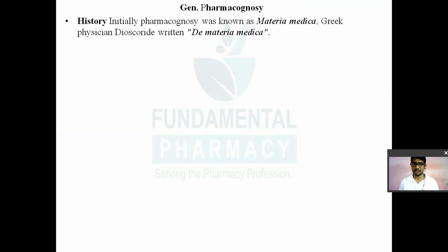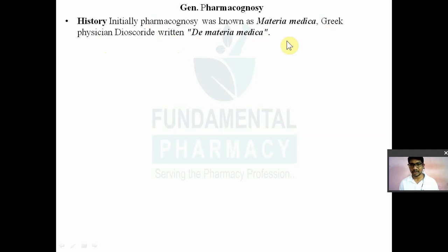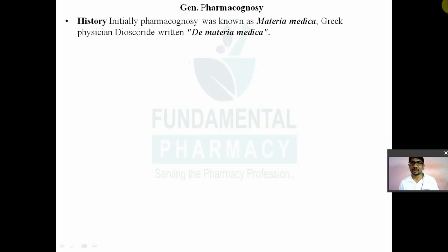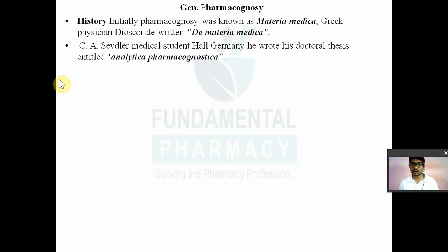First, we will see the history of general pharmacognosy — only the important points for GPAT and NIPER. Pharmacognosy was previously known as materia medica. The name was given when a Greek physician Dioscorides wrote a book known as De Materia Medica. In this book, Dioscorides listed crude drugs from animal, plant, and mineral sources along with their uses. Later, this materia medica came to be known as pharmacognosy.